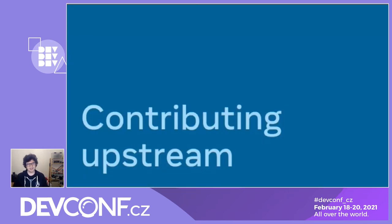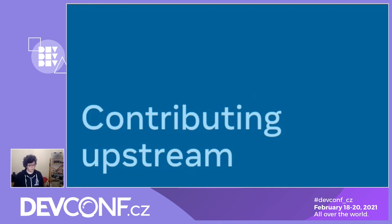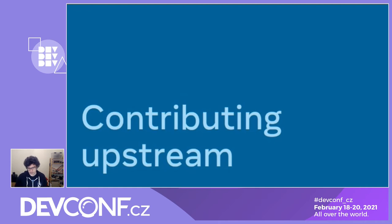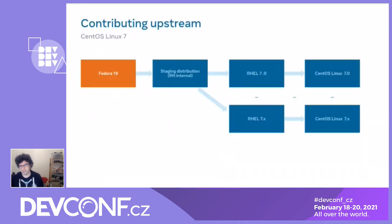I went fairly fast on those topics on purpose because the part I want to focus on is upstream contributions — I think that's the interesting and important bit, and something that isn't necessarily well understood in general. To talk about this, let's take a step back and think about how the distribution is built. I'll go over examples starting from how CentOS Linux 7 was built.